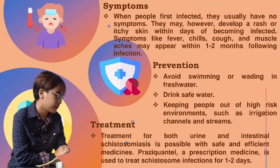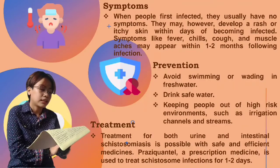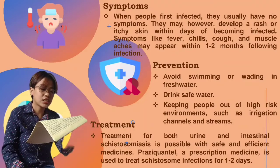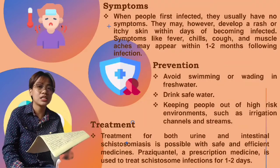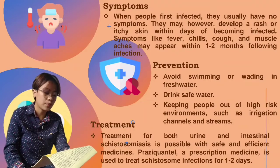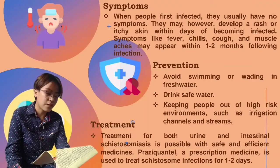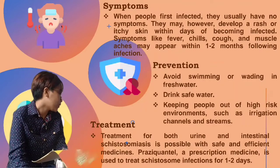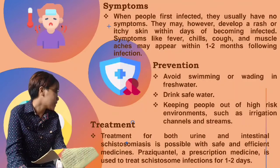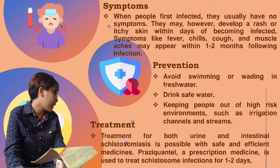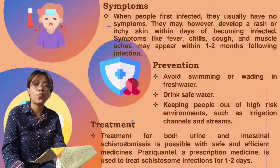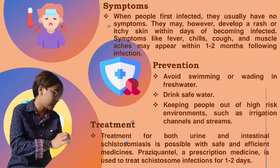For the treatment, treatment for both urinary and intestinal schistosomiasis is possible with safe and efficient medicines. Praziquantel, a prescription medicine, is used to treat schistosomiasis infection for 1 to 2 days.